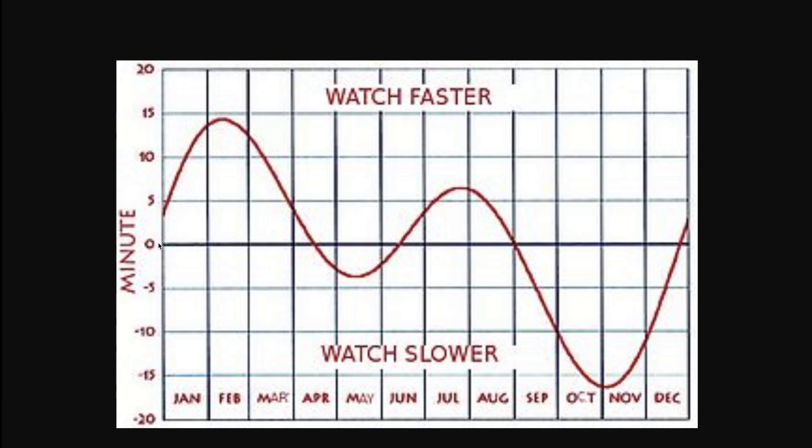So for example, solar noon in my time zone will be 12 noon in Albany, New York. I am 9 degrees to the west of Albany, New York, so my solar noon comes 9 degrees later and at 4 minutes per degree. That means that my solar noon will be 36 minutes later at 12:36.